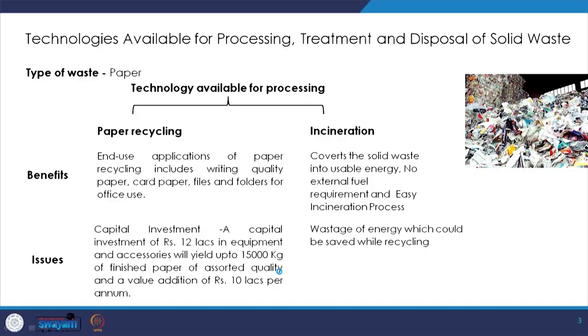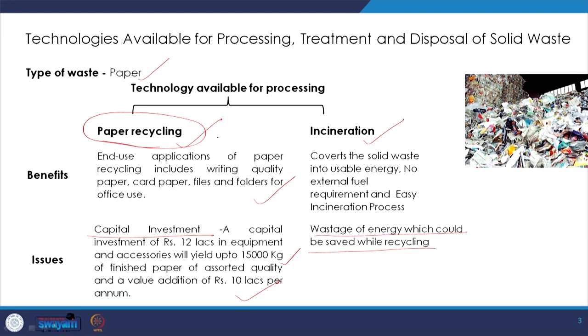I will quickly take up some different types of waste and look at the technologies available and a quick comparative. For commonly available paper waste, there are two types of technologies: incineration, where we convert the solid waste into usable energy, and paper recycling. The issue with incineration is that there is a lot of wastage of energy that could be saved through recycling. Paper recycling allows end-use applications to be achieved. It requires a capital investment of approximately 12 lakh rupees, which yields up to 15,000 kg of finished paper and creates a value addition of 10 lakhs per annum. Paper recycling is the better strategy overall, but it requires significant operations, maintenance, and labor cost — though it also simultaneously provides job opportunities.